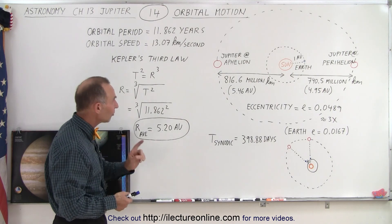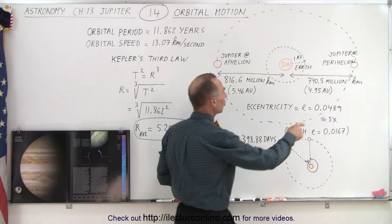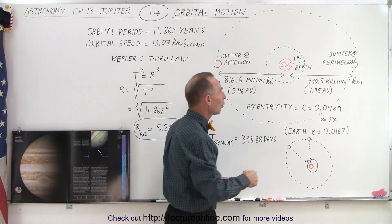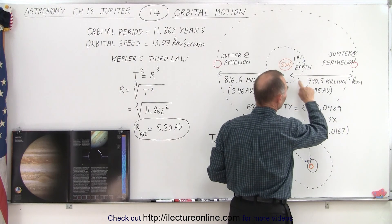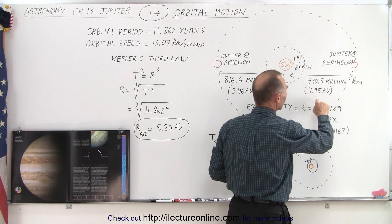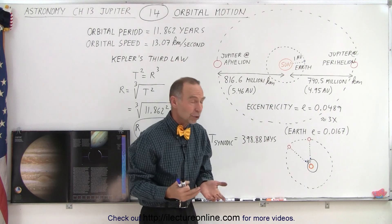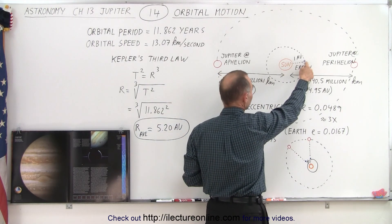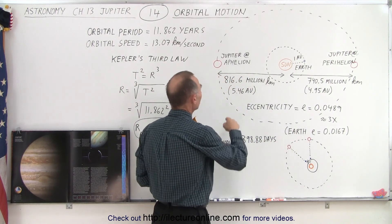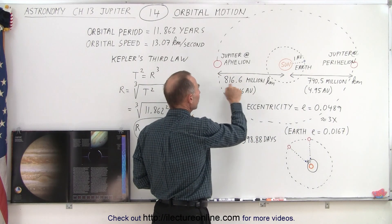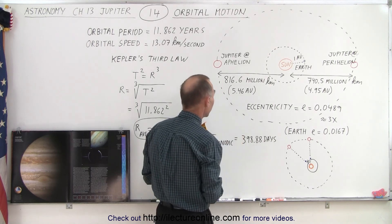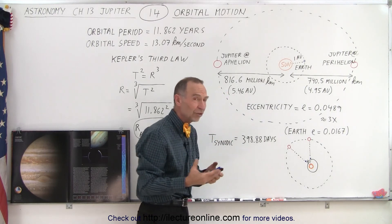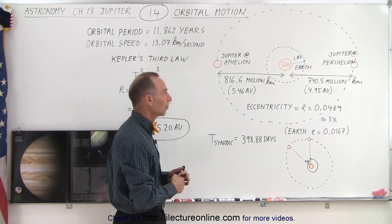The distance from Jupiter to the Sun varies quite a bit throughout its orbit. At the closest approach, at perihelion, the distance is 740.5 million kilometers, which is 4.95 astronomical units. Remember that an astronomical unit is the average distance from the Earth to the Sun. But at aphelion, Jupiter is 816.6 million kilometers away from the Sun, which is 5.46 astronomical units. The average of those two numbers is about 5.2 astronomical units.